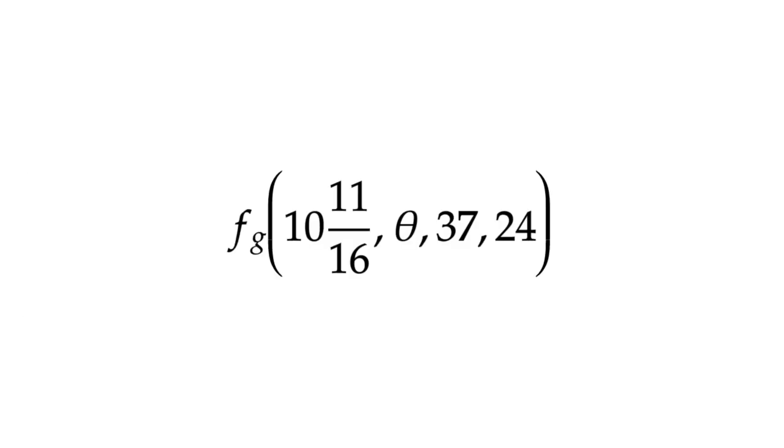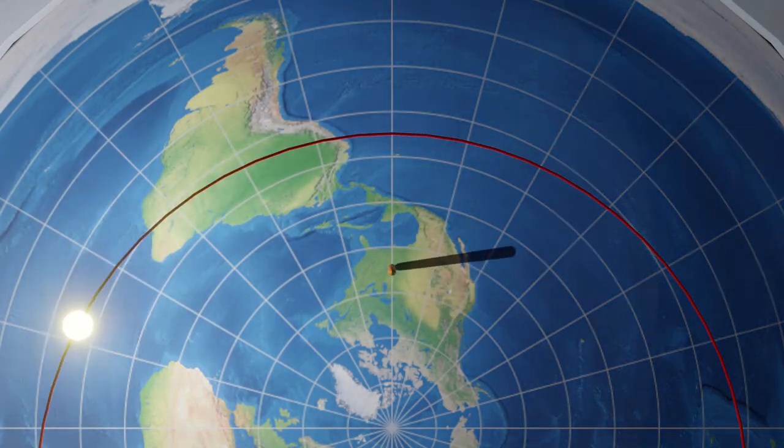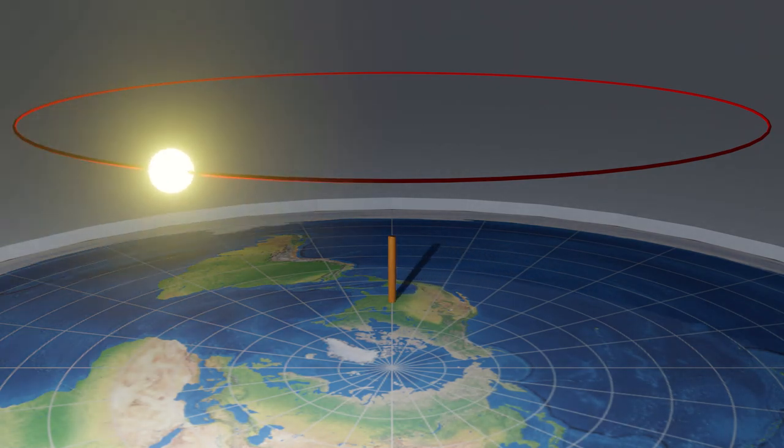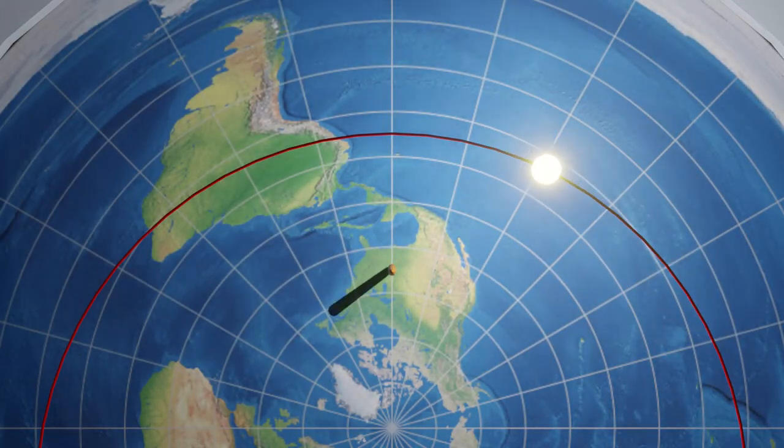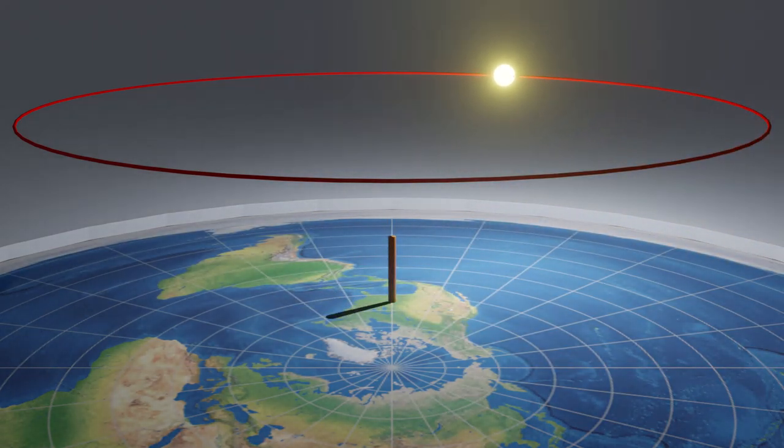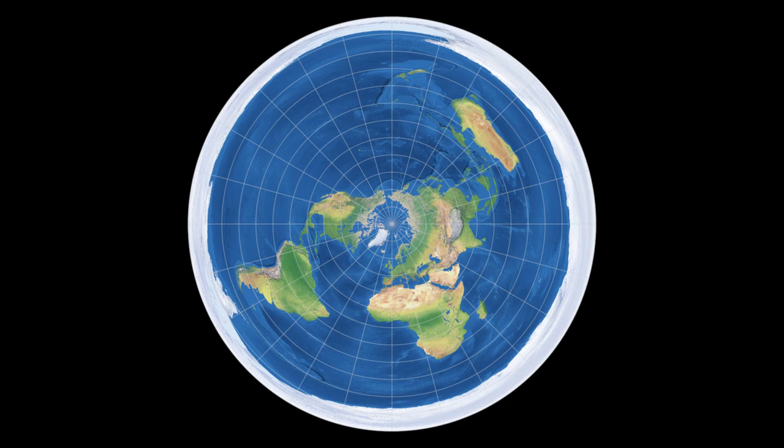Unlike the globe model, the flat earth model is much easier to derive shadows on mathematically. However, as you'll soon see, it's not because the model works better, but rather because everything is so vaguely and broadly defined it's hard to pin down an accurate prediction. So, to compensate for this, I'll be nice. I'll give the model the full benefit of the doubt and assume the numbers that predict the most accurate result the model can possibly yield.